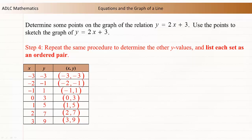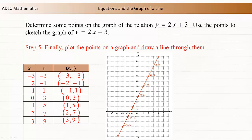List each set as an ordered pair. Finally, plot the points on the graph and draw a line through them.